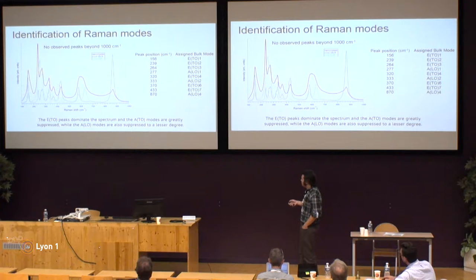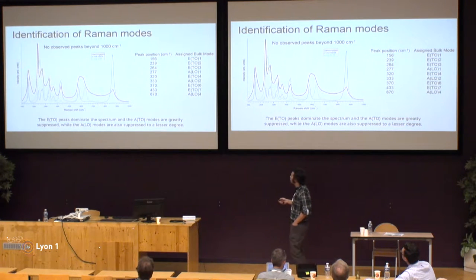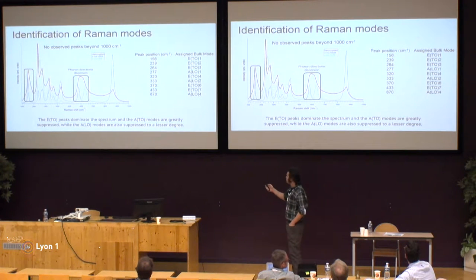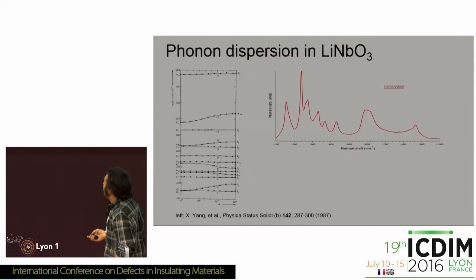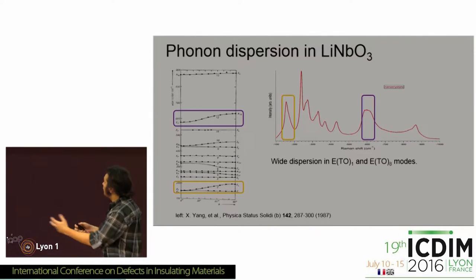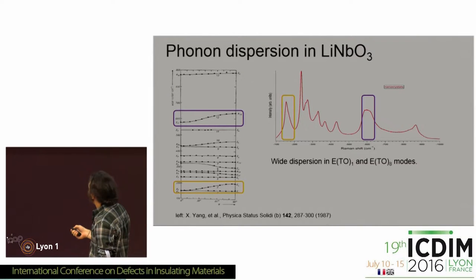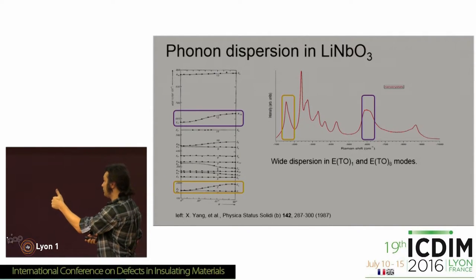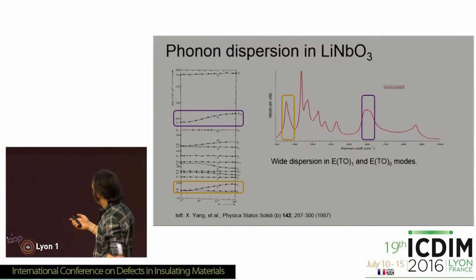If you compare the nanocrystal Raman spectra to bulk lithium niobate — in blue that's the Z-cut near-stoichiometric lithium niobate, and there's also X-cut — you see there's this directional dispersion across the whole region, and it's largest in certain areas. If you look at the directional dispersion, what it actually tells you is that these nanocrystals in the trap are at a variety of orientations — some are Z-cut, others are X-cut, so to speak.